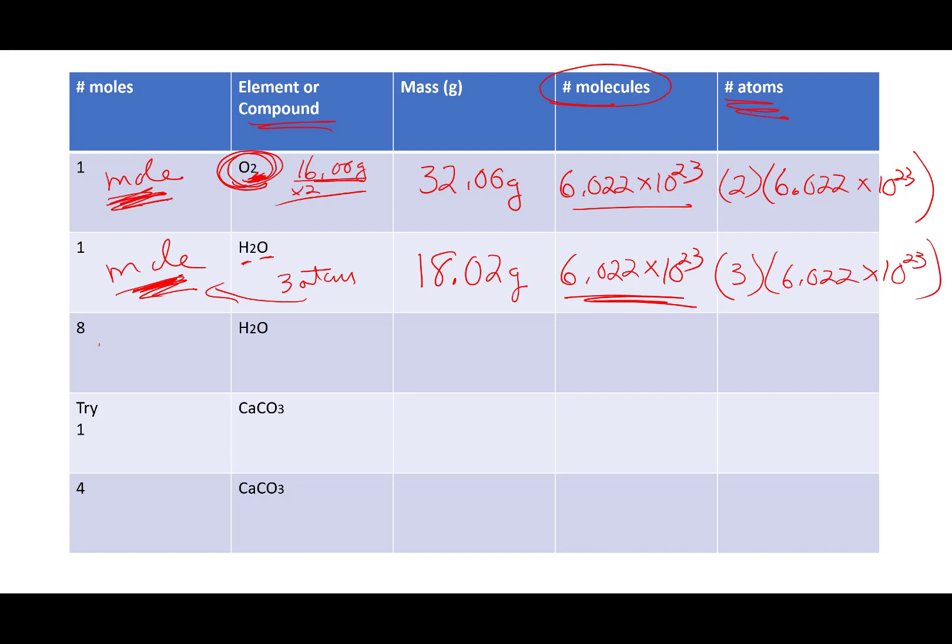Let's do another one. What if I have eight moles? What's the mass going to be? Eight times 18.02. How many molecules? Well, each mole contains that many pieces. So how many molecules? Eight times Avogadro's number. How many atoms? Well, each molecule, so there's eight for the eight moles. There's three atoms in each one of these, and then there's 6.022 times 10 to the 23rd. All right, hit pause. Try the next two for chalk, calcium carbonate, and then we'll go through them together.